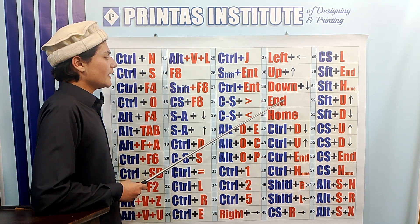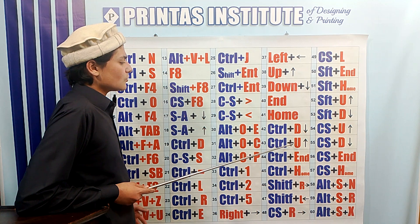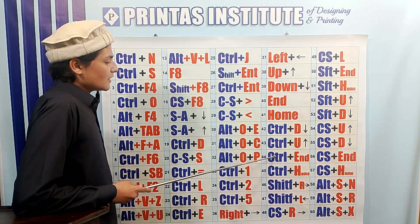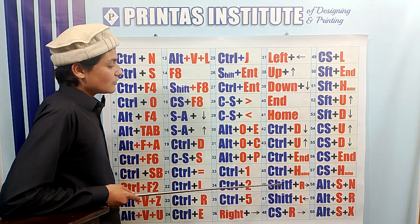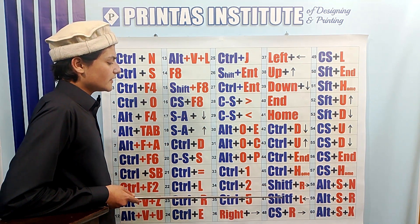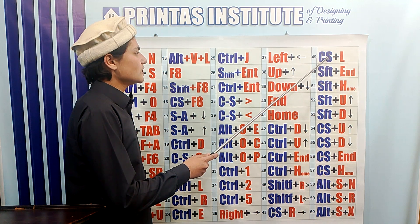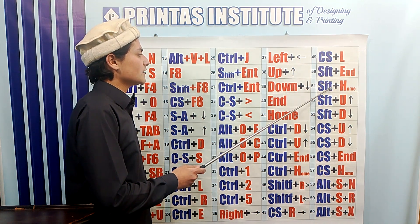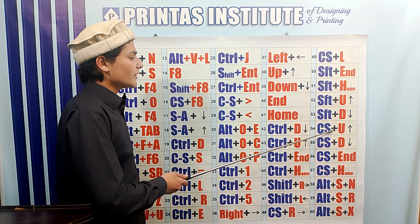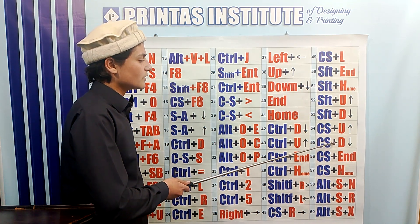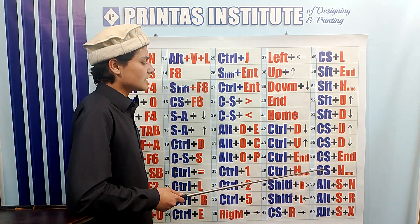Alt O is used to move the cursor upward. Ctrl Down Arrow is used to move to the end of the paragraph. Ctrl Up Arrow is used to move to the start of the paragraph. Ctrl End moves the cursor to the end of the page. Ctrl Home moves the cursor to the start of the page. Shift Right Arrow selects one character to the right; Shift Left Arrow selects one character to the left. Ctrl Shift Right Arrow selects one word to the right; Ctrl Shift Left Arrow selects one word to the left. Shift End selects to the end of the line; Shift Home selects to the start of the line. Shift Up Arrow selects upward; Shift Down Arrow selects downward. Ctrl Shift Up Arrow selects one paragraph upward; Ctrl Shift Down Arrow selects one paragraph downward. Ctrl Shift End selects to the end of the page; Ctrl Shift Home selects to the start of the page.